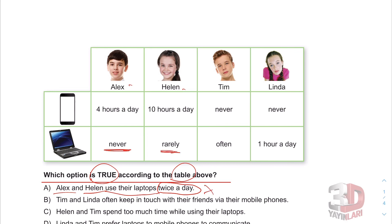B: Tim and Linda often keep in touch with their friends via their mobile phones. Tim ve Linda sık sık often keep in touch, haberleşiyorlar with their friends, arkadaşıyla via their mobile phones, telefonlarıyla. Let's see — Tim and Linda never, never — asla. This is not true.